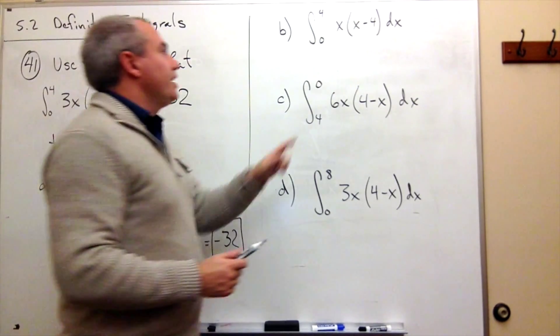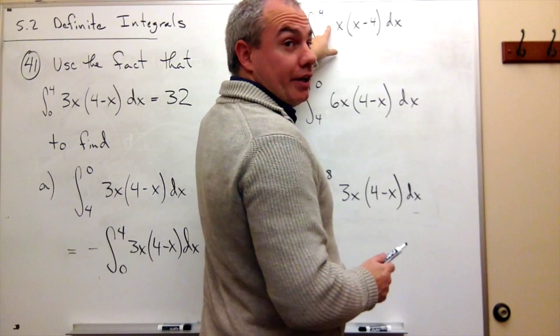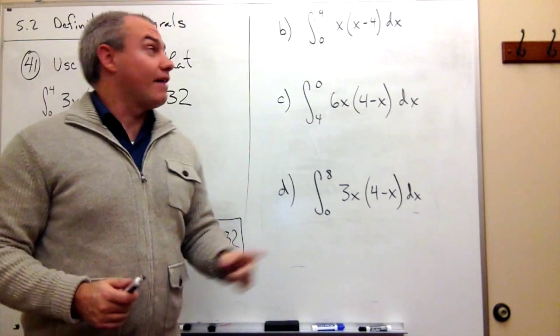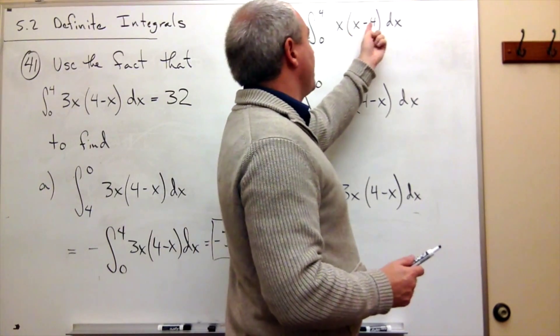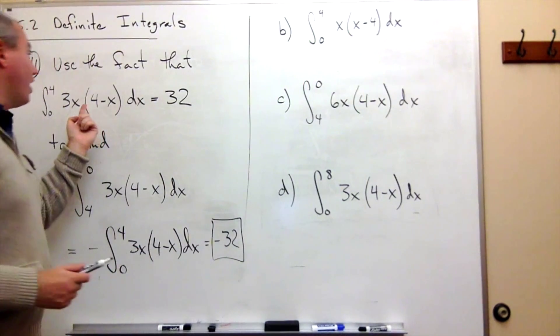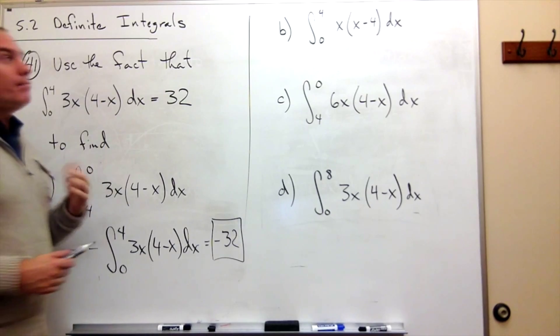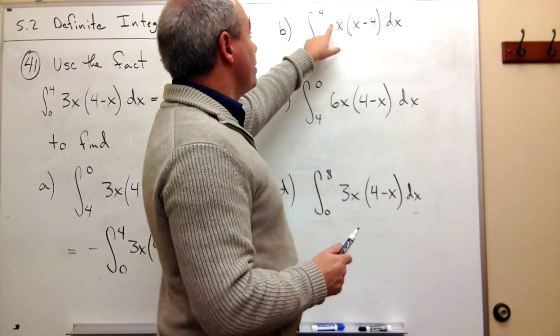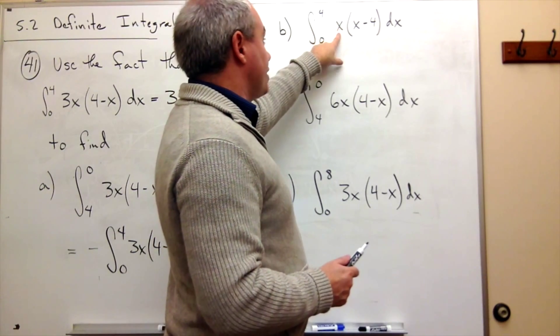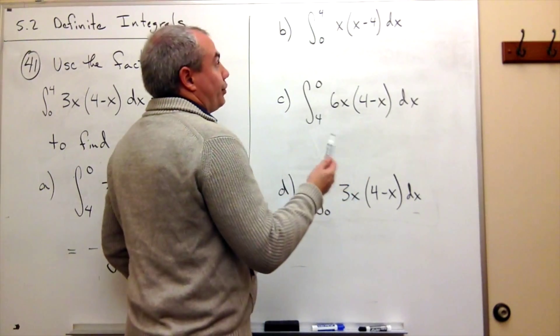The first thing that's different is I don't have a 3 right here, right? I have a 1. The second thing that's different is I have an x minus 4, not a 4 minus x. Both of these things are easy to deal with. Let's take it one step at a time. First of all, I have an x here. And I want a 3x.